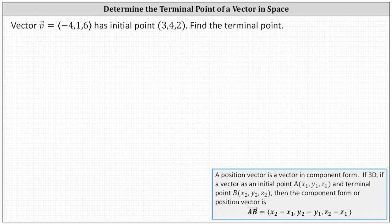We're given vector v has an x component of negative four, a y component of one, and a z component of six with initial point three comma four comma two. We're asked to find the terminal point.